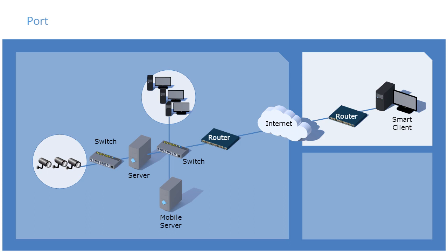In the Internet Protocol suite, a port is an endpoint of communication in an operating system, while the term is also used for hardware devices. In software, it's a logical construct that identifies a specific process or a type of network service. A network port is associated with the IP address of a host and provides access to a specific service on that host. It's identified by a 16-bit port number, for example 0 to 65535. Services can be assigned or reassigned to any port desired.